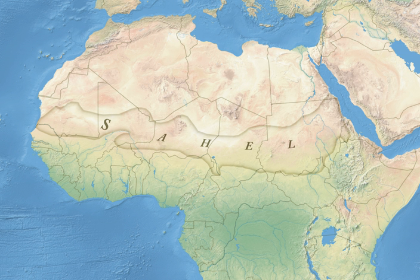The Sahel spans 5,400 km from the Atlantic Ocean in the west to the Red Sea in the east, in a belt that varies from several hundred to a thousand km in width, covering an area of 3,053,200 square kilometres. It is a transitional ecoregion of semi-arid grasslands, savannas, steppes, and thorn shrublands lying between the wooded Sudanian savannah to the south and the Sahara to the north. The topography is mainly flat, with most of the region lying between 200 and 400 m in elevation. Annual rainfall varies from around 100 to 200 mm in the north to around 600 mm in the south.